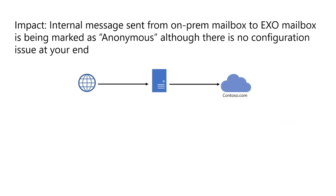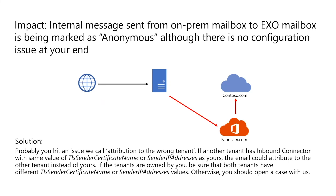Another problem we have seen is an internal message sent from on-prem to EXO being marked as anonymous, with no configuration issue found at your end. If this happens, you probably hit an issue we call attribution to wrong tenant. If another tenant has an inbound connector with the same value of TLS sender certificate name or sender IP address as yours, the email could be attributed to the other tenant instead of yours. If the other tenant is owned by you, make sure both tenants have different TLS sender certificate names configured. But if you do not have control over the wrongly configured tenant, you need to open a case with us and we will contact the administrator of the other tenant to solve the issue.